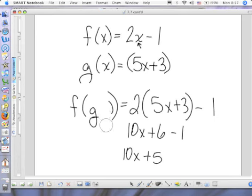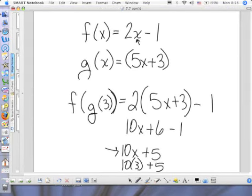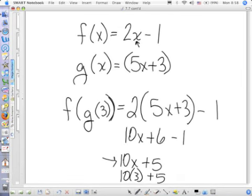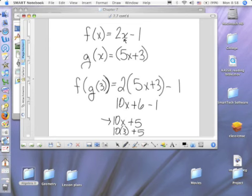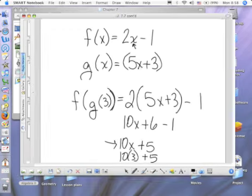Now, if I had taken this and said, what's f composed of g of 3? The composition is still the same. The only difference is when you get to this very final step, you plug a 3 in for x and you evaluate. So that means when I get to this step right here, then it's 10 times 3 plus 5, which would be what? 35. 10 times 3 plus 5.